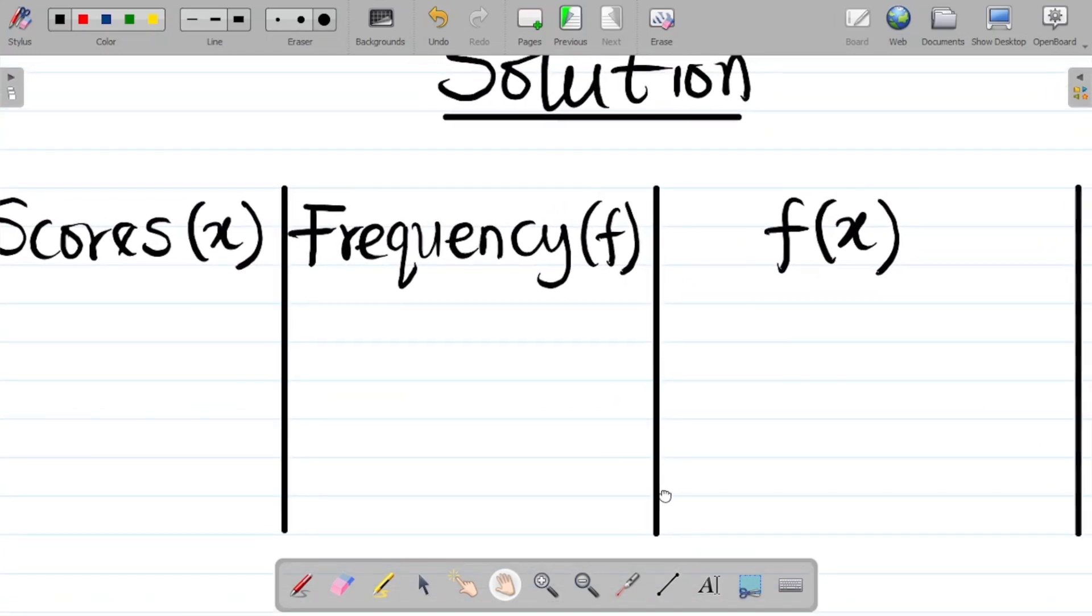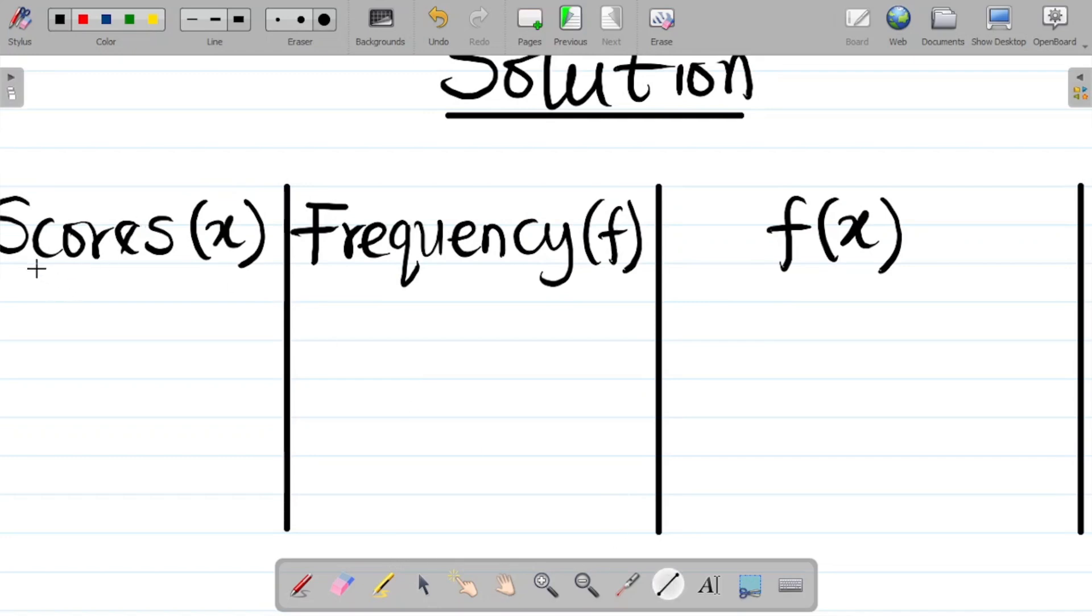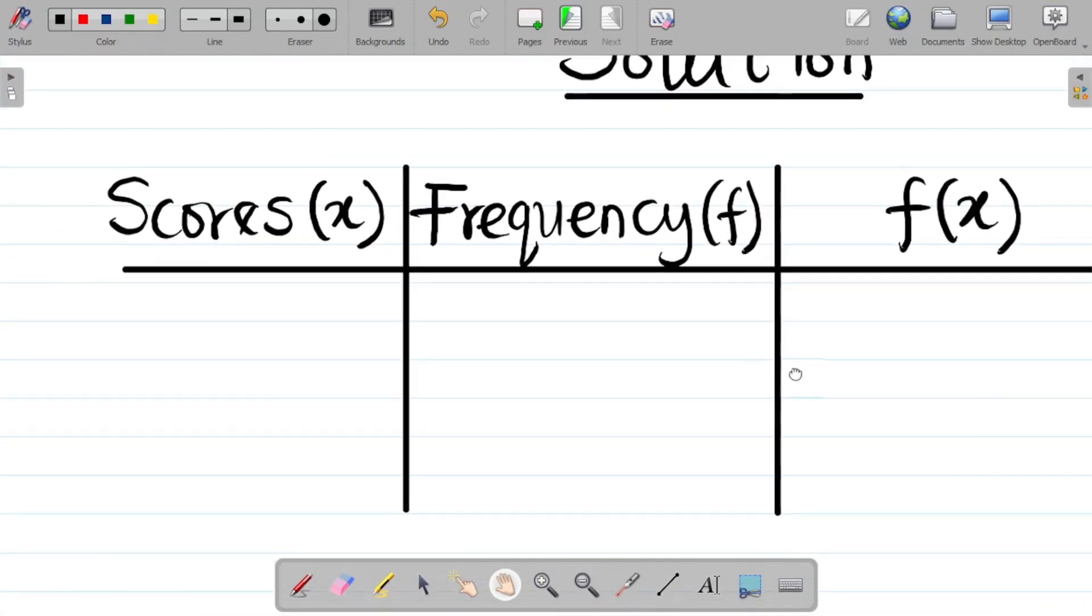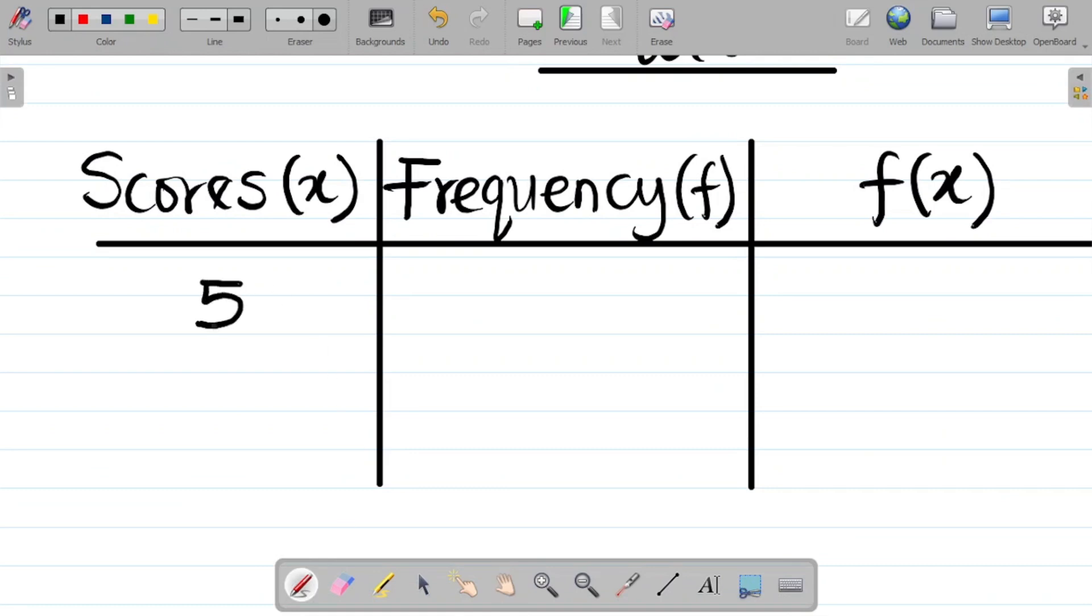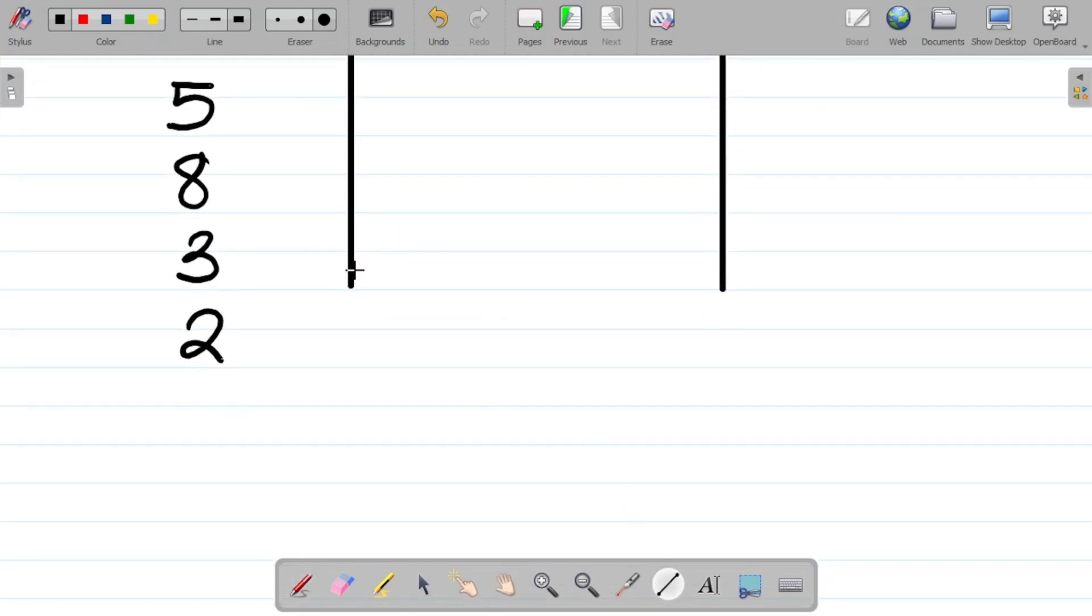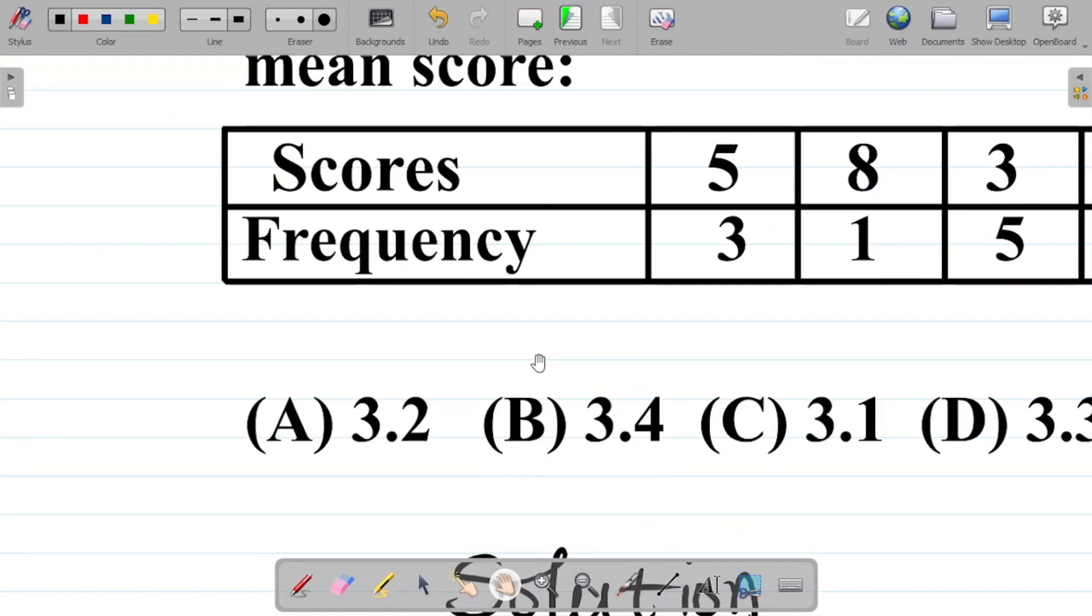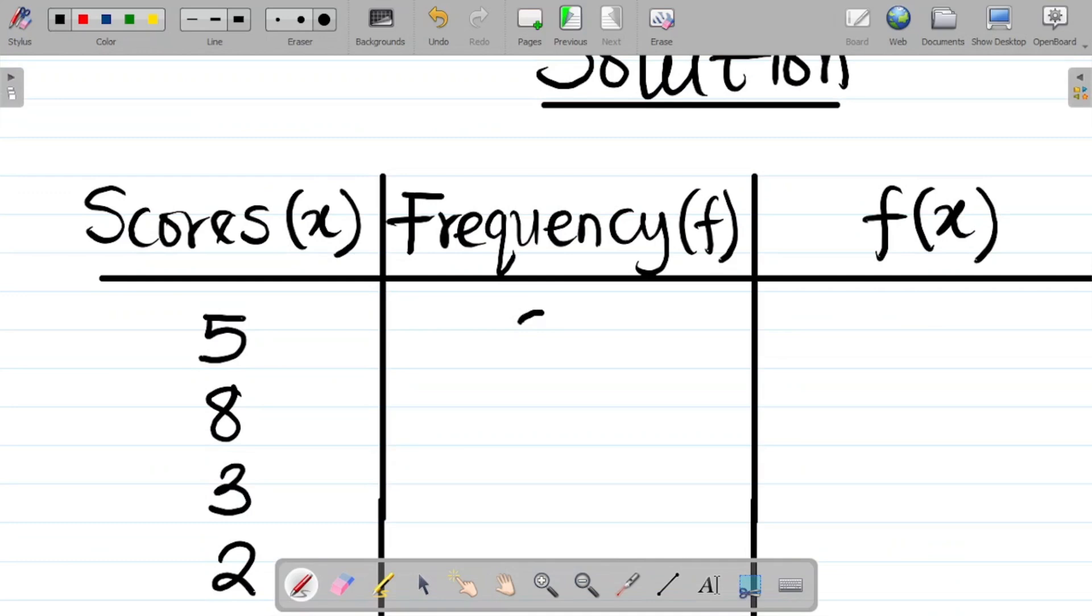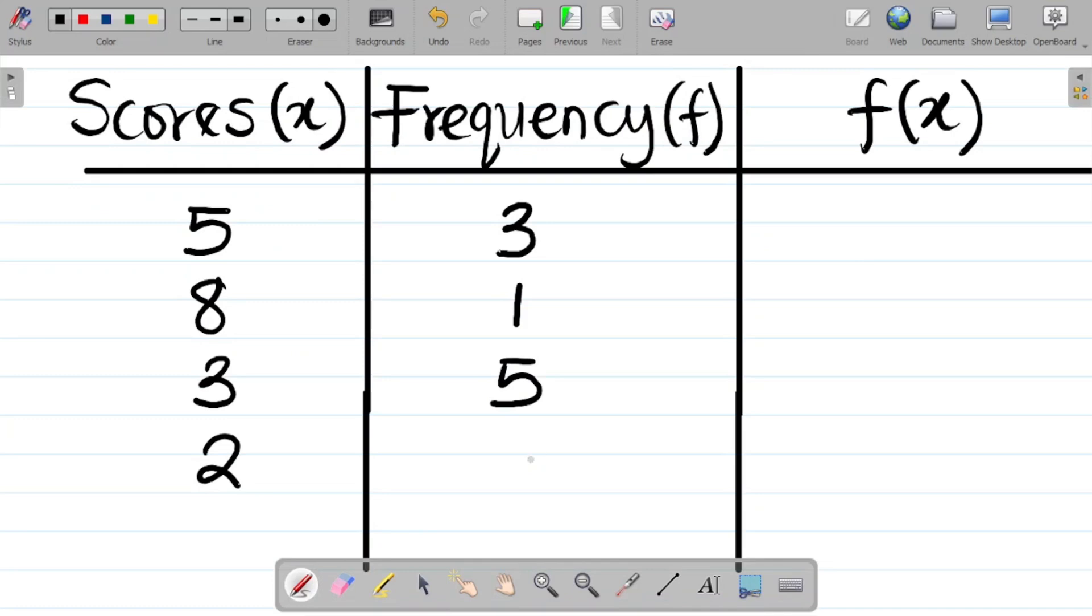Having done that, what's the next thing there? Next thing we'll do is to input the values of the scores and the frequency in this table. So the scores we have there are 5, 8, 3 and 2. For frequency we have this as 3, 1, 5, 6 respectively.